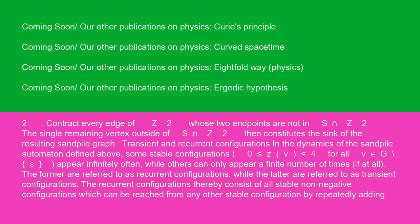Also, sandpile models on non-rectangular grids of the standard square lattice, or of any other lattice, can be defined. Intersect some bounded subset S of ℝ² with ℤ². Contract every edge of ℤ² whose two endpoints are not in S ∩ ℤ². The single remaining vertex outside of S ∩ ℤ² then constitutes the sink of the resulting sandpile graph. Transient and recurrent configurations: in the dynamics of the sandpile automaton, some stable configurations appear infinitely often, while others can only appear a finite number of times, if at all. The former are referred to as recurrent configurations, while the latter are referred to as transient configurations.